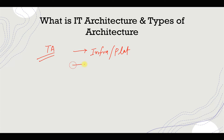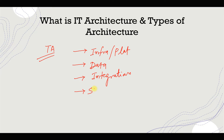The next component in technology architecture is integration platforms. When we need to integrate between external parties or between systems, these all come into technology architecture and we need to define that. The next component in technical architecture is software components. So these are the four main components that come into technical architecture.